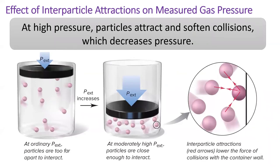If we continue to imagine a real gas at high pressure, we see that the particles are much closer together. As we will learn in chapter 11, substances attract or stick to each other due to something called intermolecular forces. This stickiness means that the gas particles will not collide with the walls of the container with quite as much force as the ideal gas law would predict, leading to a decrease in the expected pressure.